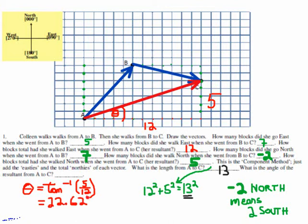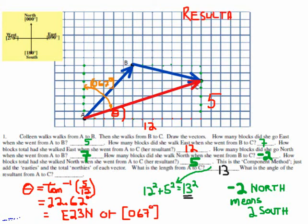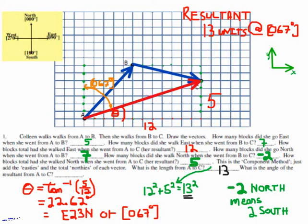I like it when you give me the final answer in a big box - thirteen units at 067 degrees bearing. So you now know four ways to solve vectors: the geometry/drawing method with scale, ruler and protractor; simple trigonometry when there's a square corner; sine and cosine law when there's no square angle; and the component method. You can also take these components and turn them into matrices - but we won't cover matrices here.